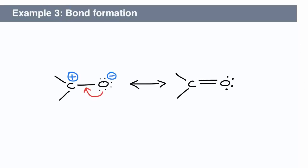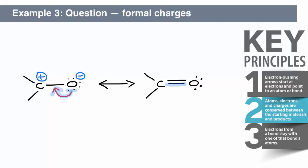The previous two examples involved breaking bonds. Electron-pushing arrows are also used to show bond formation. In this third example, an electron pair on oxygen forms a bond between the oxygen and carbon atoms. What is the charge on the oxygen and the indicated carbon atoms in the products? The oxygen and carbon atoms are both neutral now. Notice that the principle of conservation of atoms, electrons, and charges has been respected.